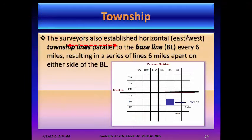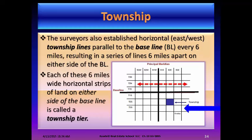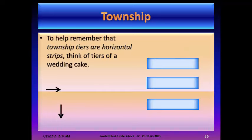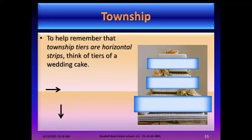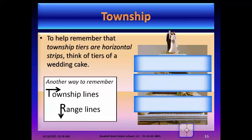Surveyors also established horizontal east-west township lines parallel to the baseline, every six miles, resulting in a series of lines six miles apart on either side of the baseline. Each six-miles-wide horizontal strip of land is called a township tier — the same concept as range lines, except they go left and right instead of up and down. To remember that township tiers are horizontal strips, think of the tiers of a wedding cake, or think of township lines with the line going across from the T, and range lines with the line coming down off the capital R.